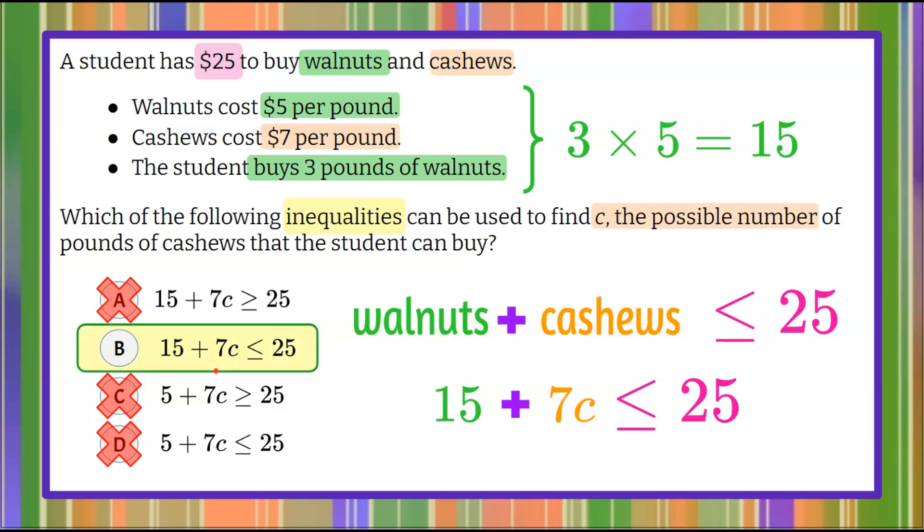And our correct answer choice here is B, 15 add 7C, less than or equal to $25.